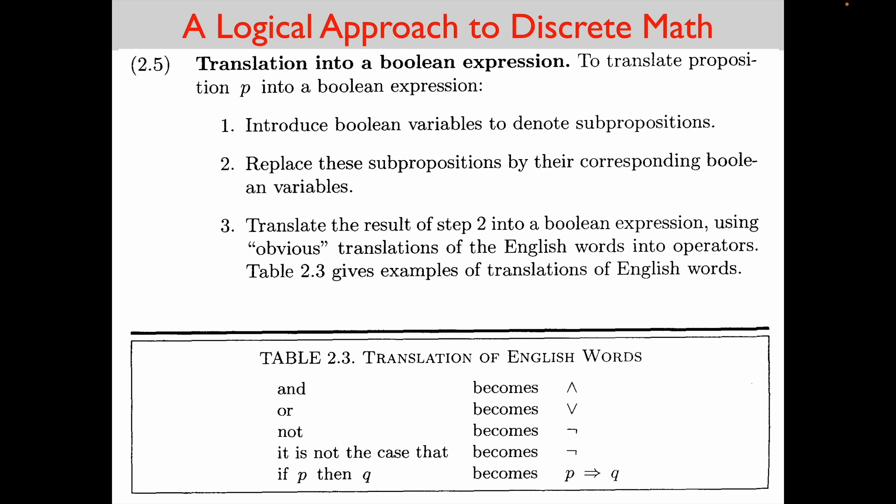This is the recap of lecture 7 for formal methods. Our first topic is how to translate from English to a boolean expression. The author in paragraph 2.5 has a three-step process: first, introduce boolean variables to denote sub-propositions; second, replace these sub-propositions by their corresponding boolean variables; and third, translate the result into a boolean expression using obvious translations of English words into boolean operators. He gives us table 2.3 for examples of these translations.